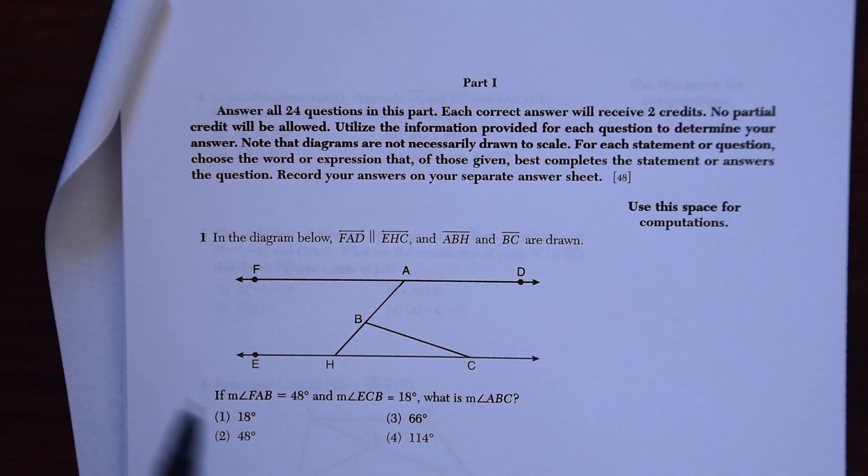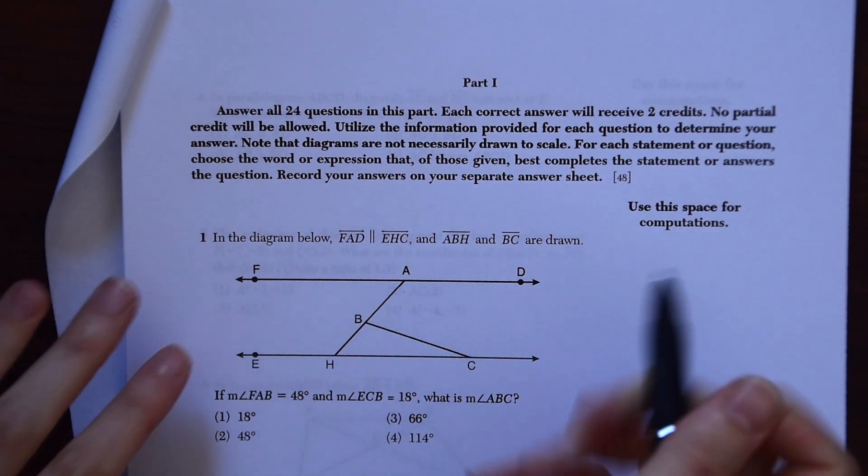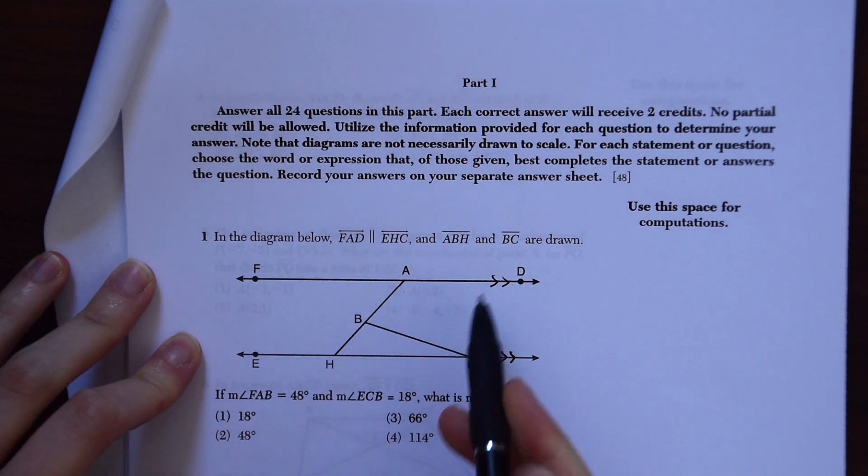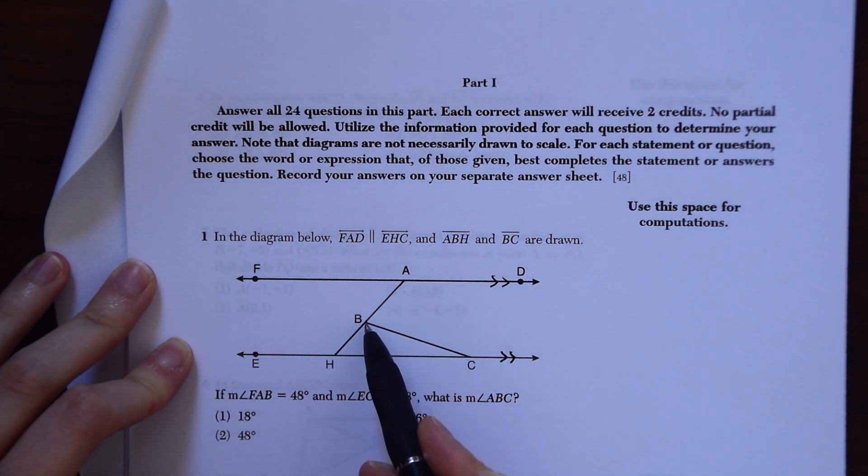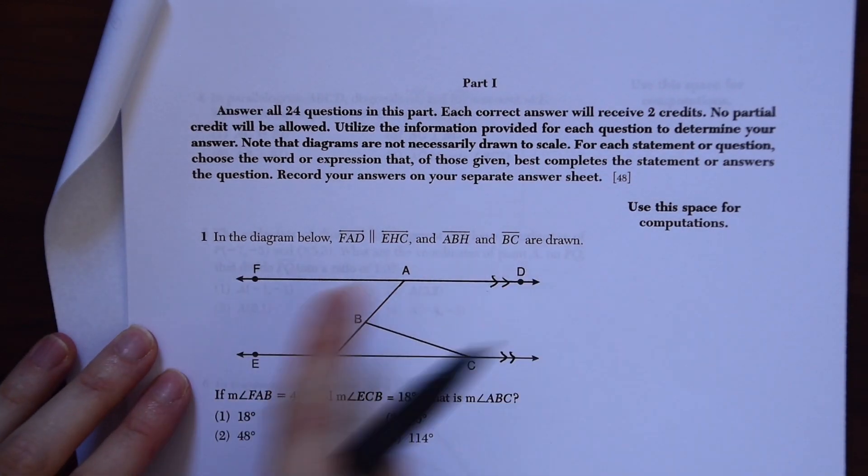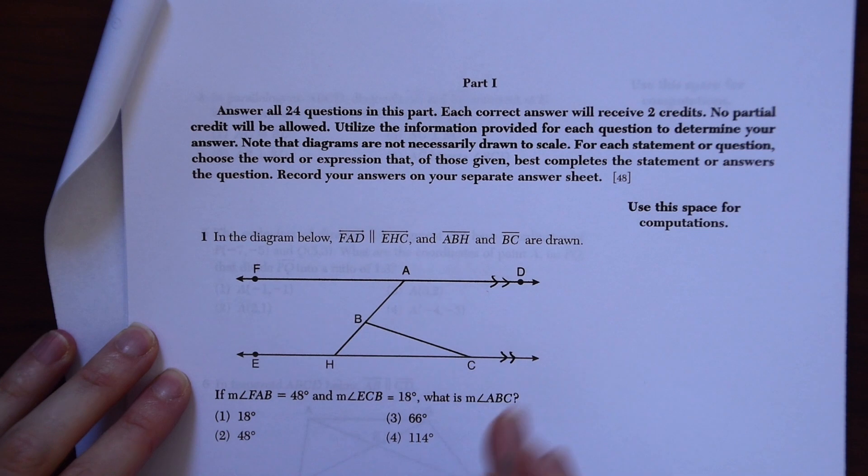So let's look at this question. Number one, we have in the diagram below FAD is parallel to EHC. So let's make our little parallel symbols. And ABH, so this line, and BC are drawn. So right away I'm thinking transversals because we have these two parallel lines and then we have these lines intersecting.